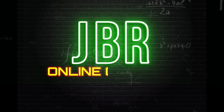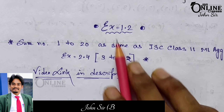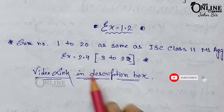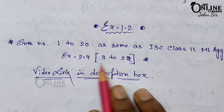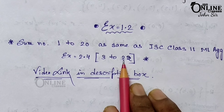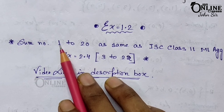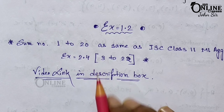Welcome back to my channel JBR Online Classes — like, share and subscribe. In this video I'm going to start Exercise 1.2. There are total 24 sums in this exercise, from sum number 1 to 20, same as ISC Class 11 ML Aggarwal Exercise 2.4 (3 to 22). In the description box there are two links: the first link covers sum numbers 1 to 12, and the second link covers sum numbers 13 to 20.